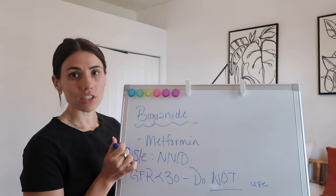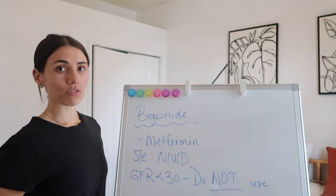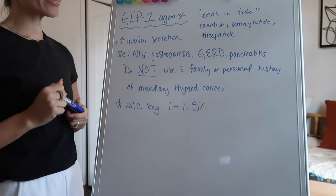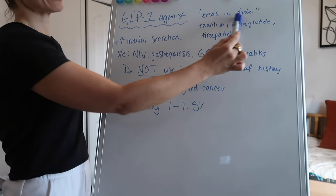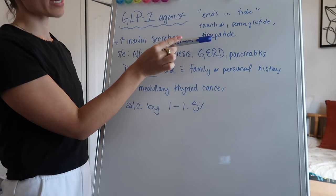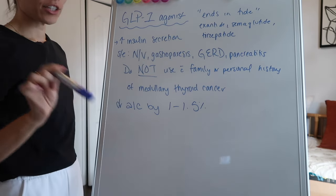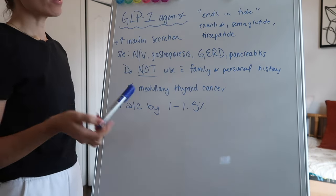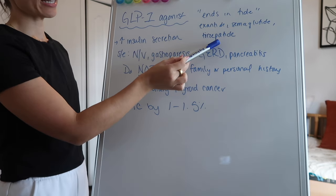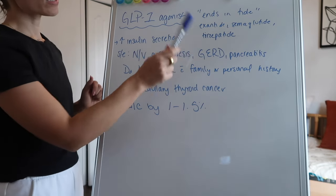Metformin can also help a little bit with decreasing the appetite, and you do get a little bit of weight loss with it — that's why it's often used for prediabetes as well. This kind of covers your first line. Next we're going to cover your GLP-1 agonists, which are going to be anything that ends in '-tide.' So think Exenatide, Semaglutide, Tirzepatide. Semaglutide and Tirzepatide are like your big ones on the market right now. Semaglutide is the generic for Ozempic and Tirzepatide is the generic for Mounjaro.